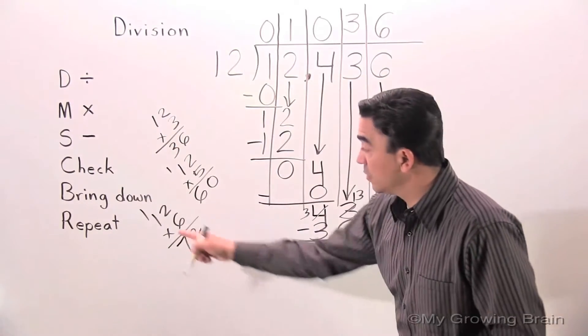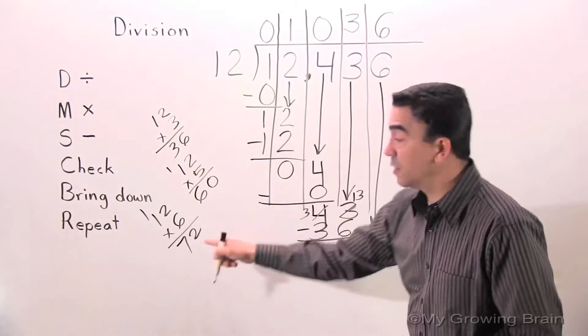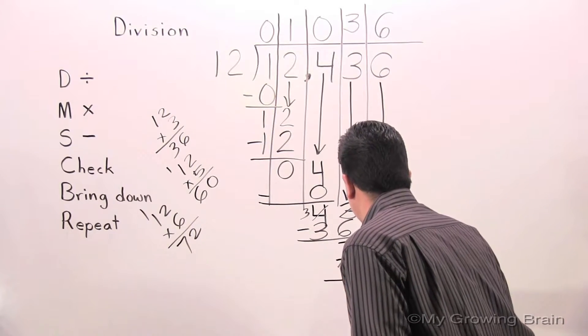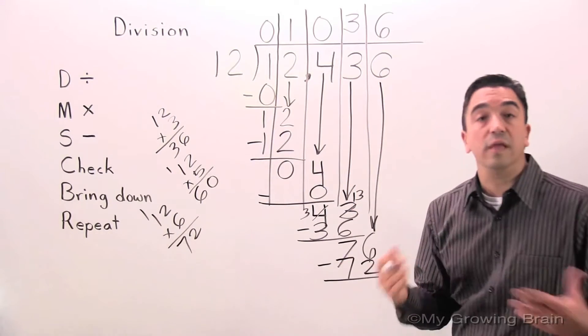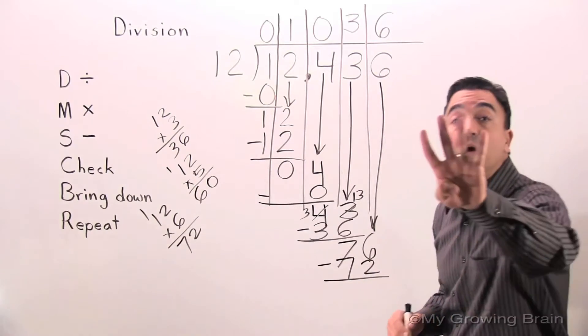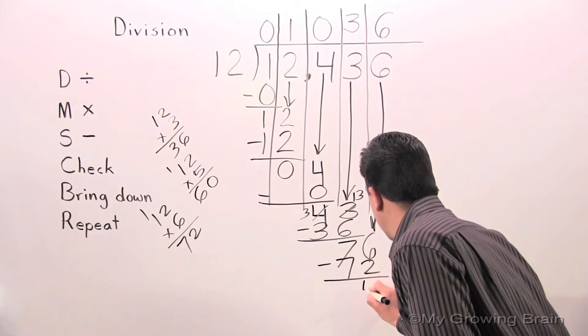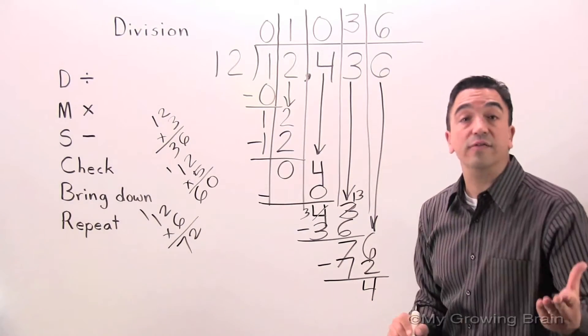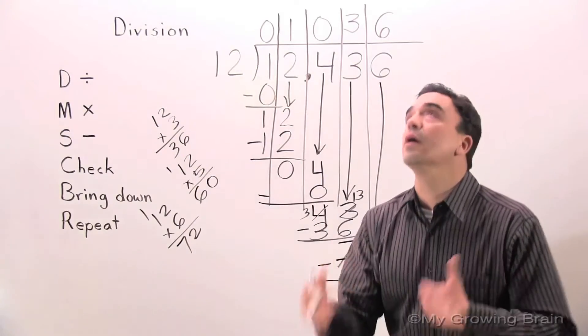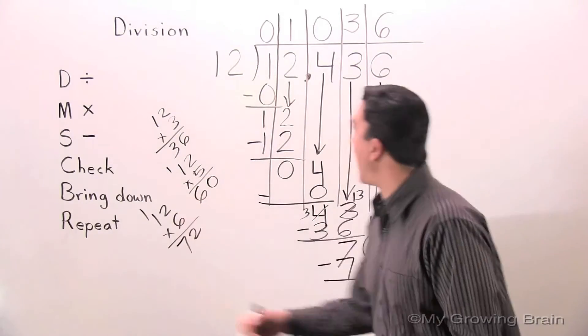Multiply. 12 times 6 is 72. Next step: subtract. 76 minus 72 is 4. Next step: check. 4 is less than 12. Keep on going. Bring down.